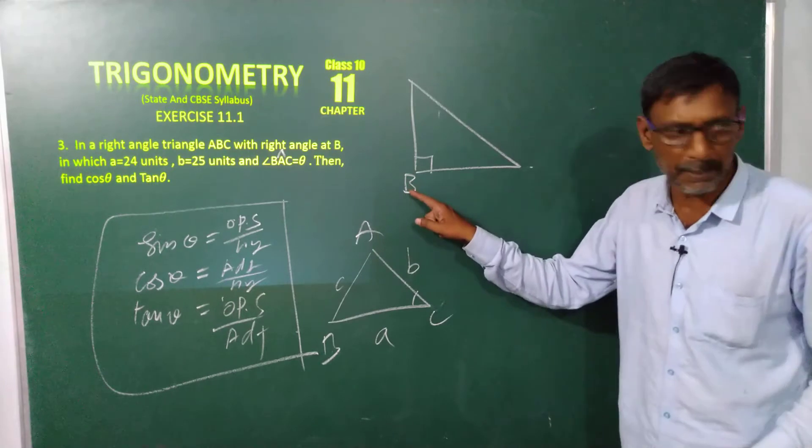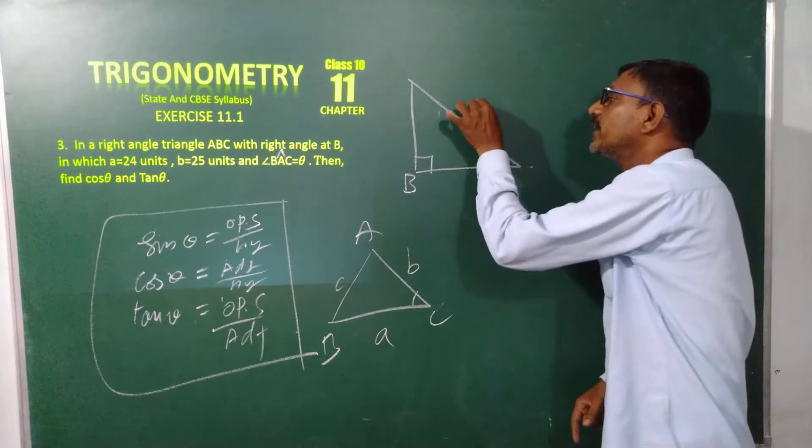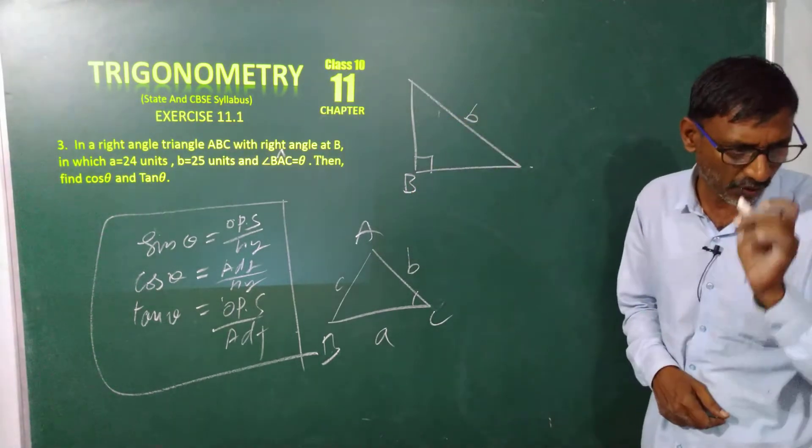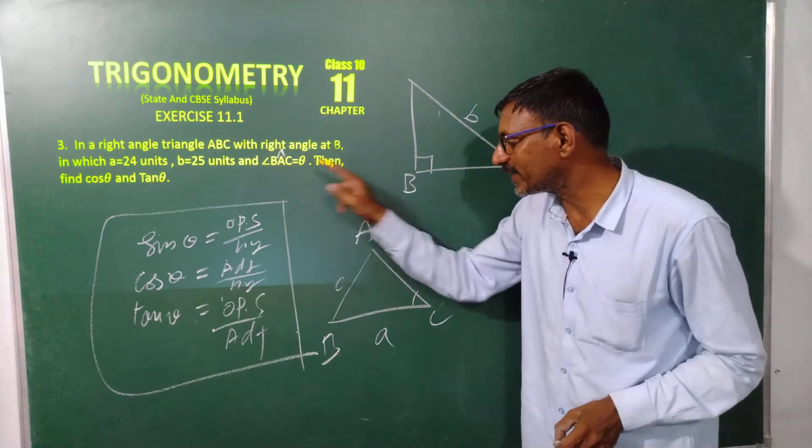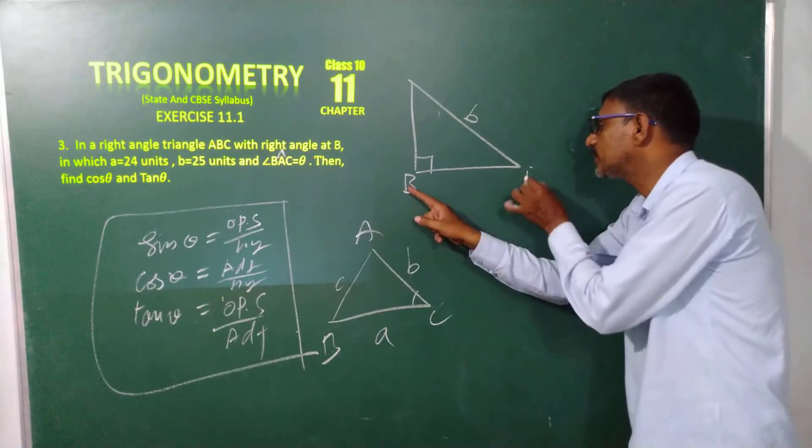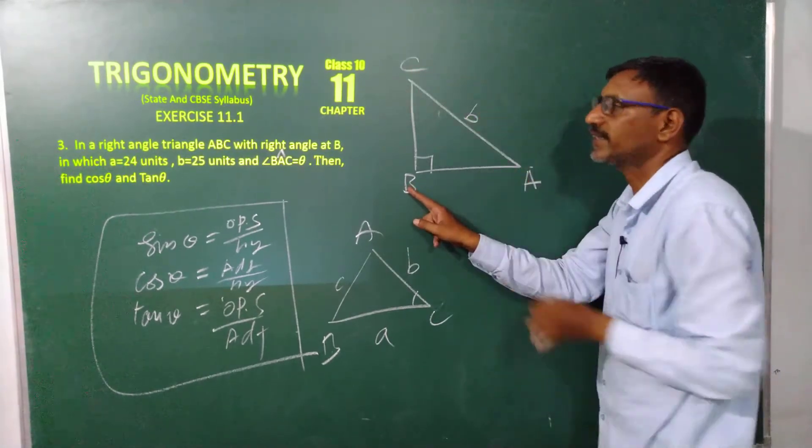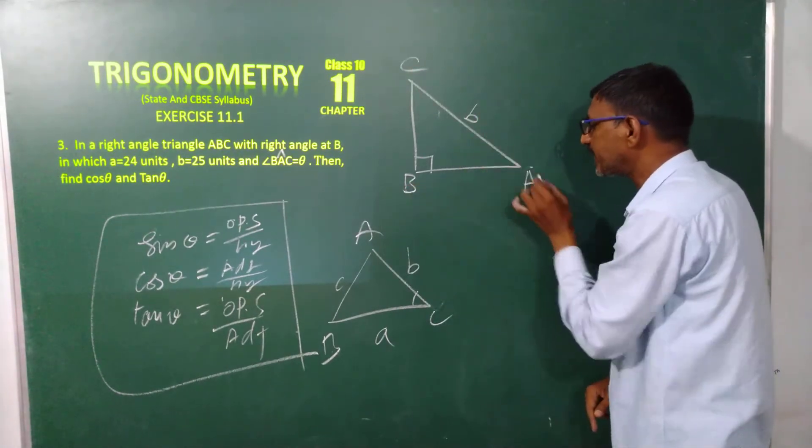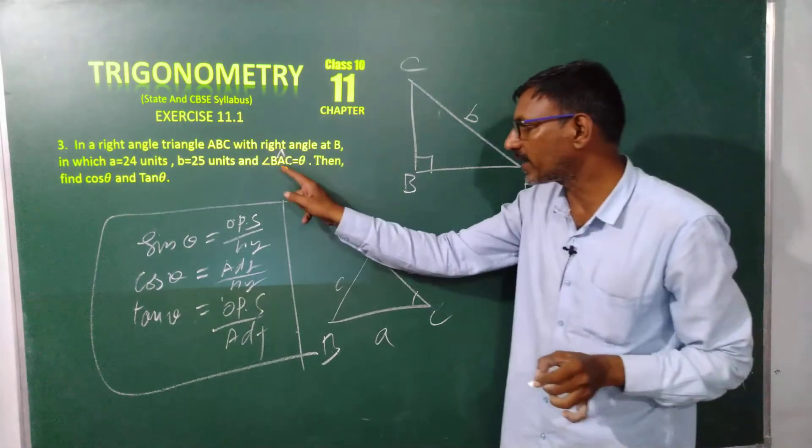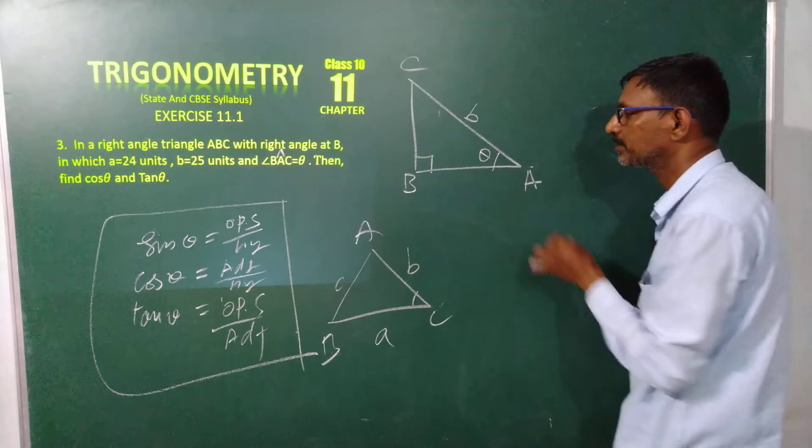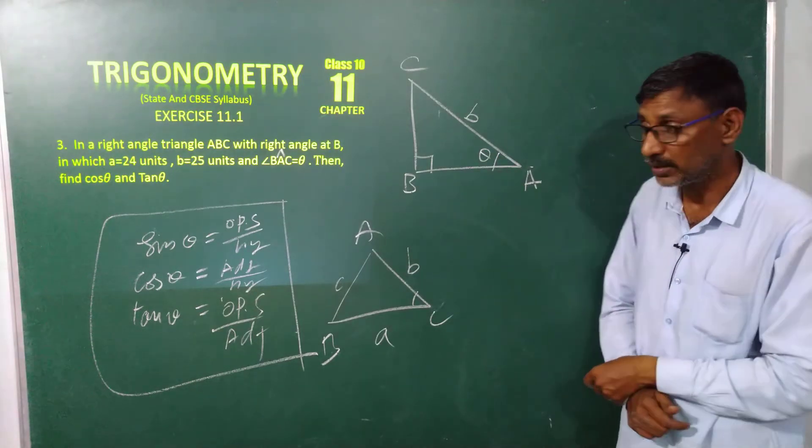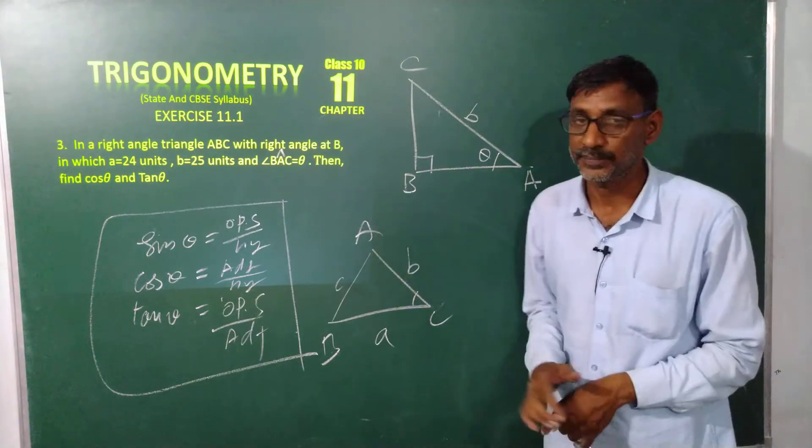So this is my B, its opposite side is small b. And one more clue is given. BAC is equal to theta. This is my A and this is my C. BAC - the middle letter, we have an angle that is given by theta. These are very very important to do this type of problem.